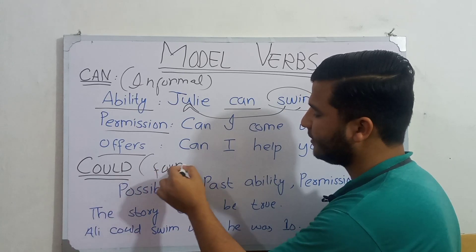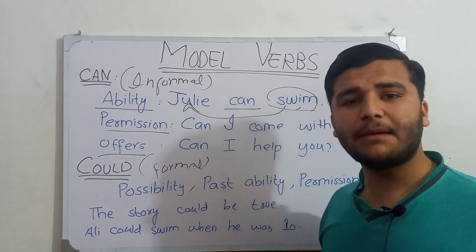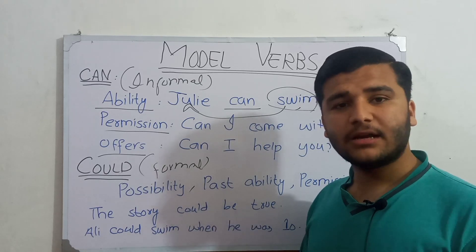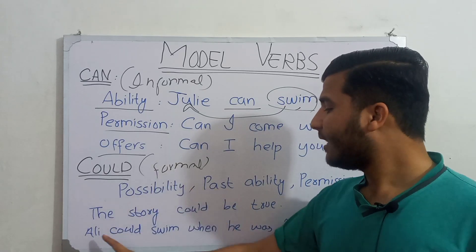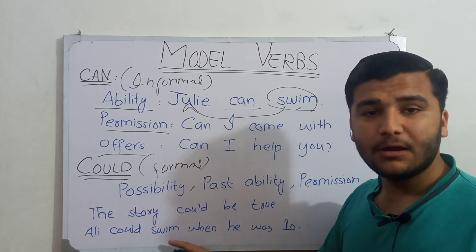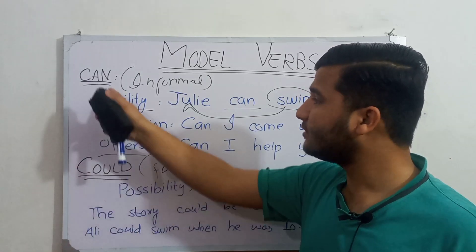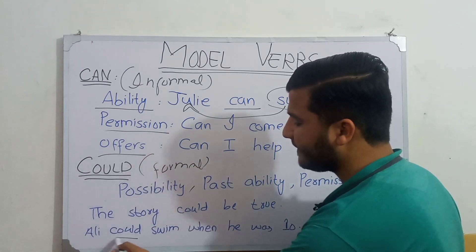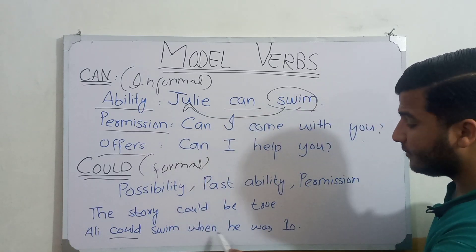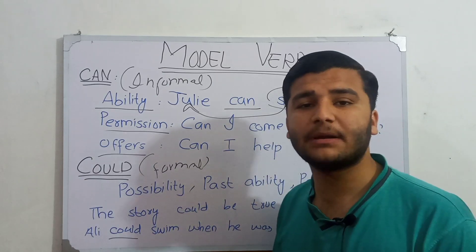The second function of 'could' is past ability. This means that at some time in the past someone could do something but now they cannot. For example, 'Ali could swim when he was 10.' Here 'could' expresses the past — 'could' is also the second form of 'can.' It means at the age of 10 Ali was able to swim, but now he cannot swim.